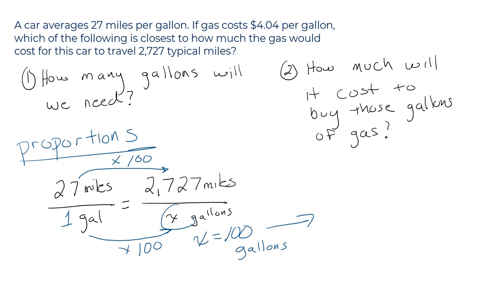Very, very close. How much would it cost to buy all those gallons? Well, once again, step two, 100 gallons. You pay $4.04 for each of those gallons. Gallons and gallons cancel. And you have, again, about $400.